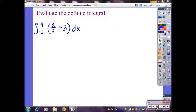If I graph x over 2 plus 2, the thing to realize is that it is a linear function with a slope of one-half and the y-intercept of 3.